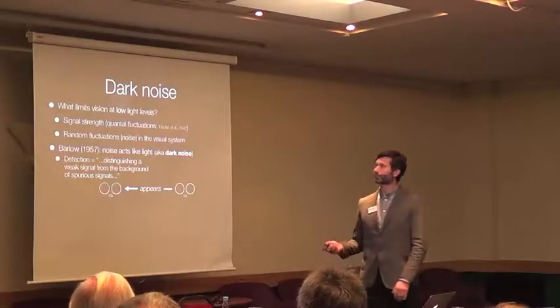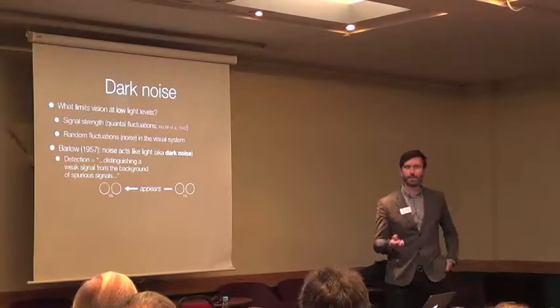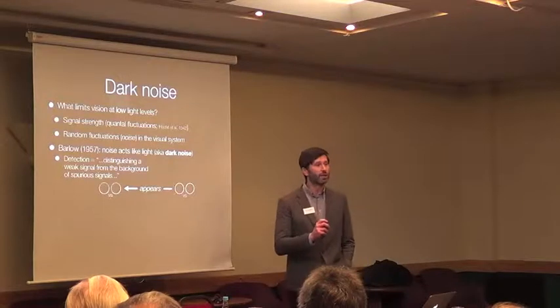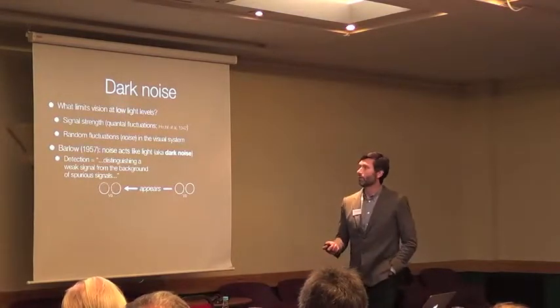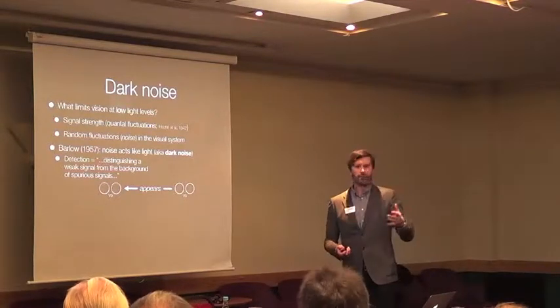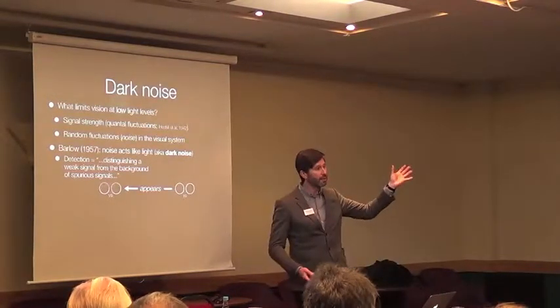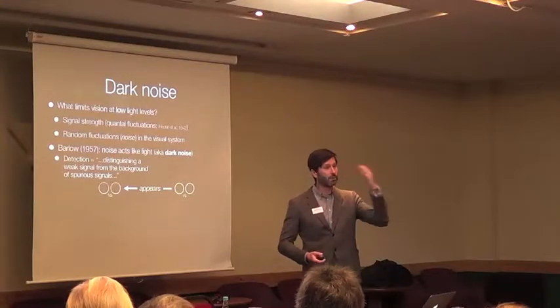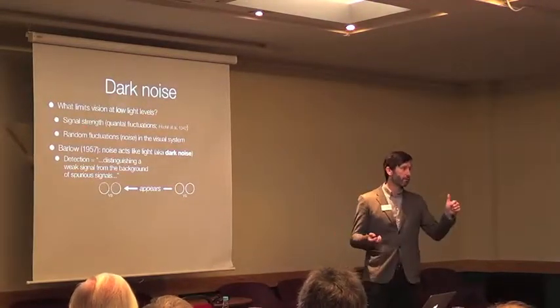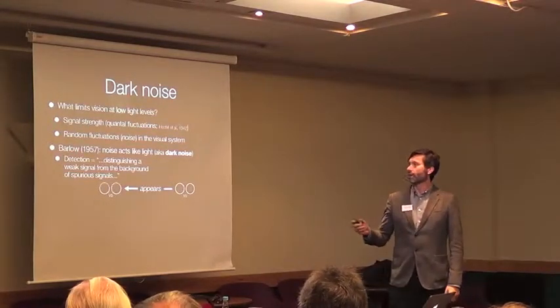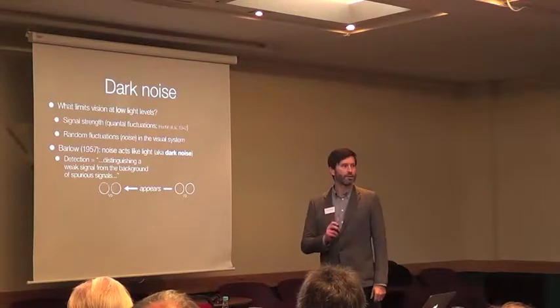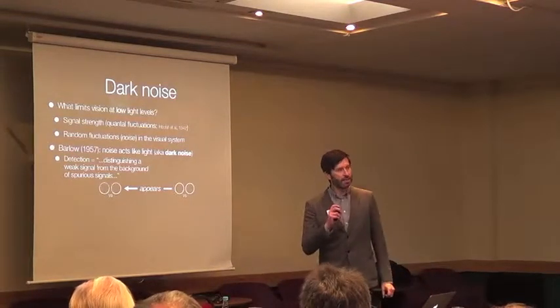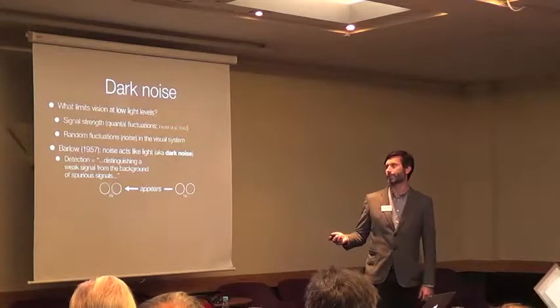The basic idea goes back to the work of Horace Barlow in the 1950s. He termed something called dark noise. The question he was asking was, what limits your vision at low light levels? If you imagine trying to recognize something on a moonlit night, one thing that will limit it will just be the signal strength. When you get right down to very low light levels, it's even limited by fluctuations in the number of quanta being absorbed by your eye. The other limit is due to random fluctuations in the operation of components of the visual system, which we as psychophysicists think of as noise. It's that uncertainty associated with the operation of different components of the visual system.